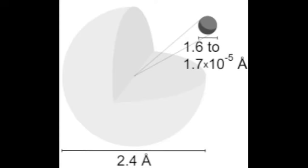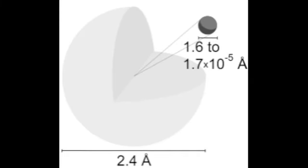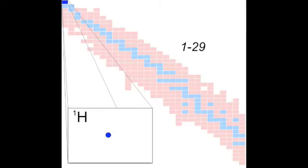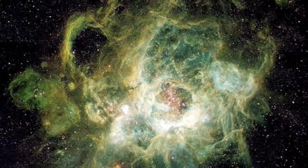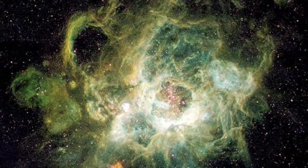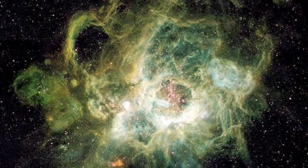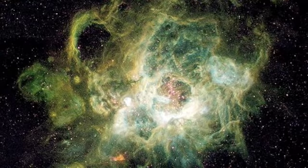Hydrogen has three naturally occurring isotopes. The most common isotope of hydrogen is protium, with a single proton and no neutrons. It is the most abundant element in the universe, making up 75% of normal matter by mass and over 90% by number of atoms. This element is found in great abundance in stars and gas giant planets.